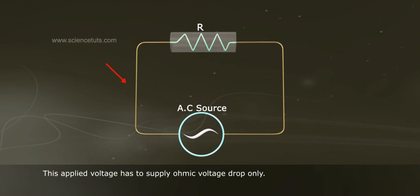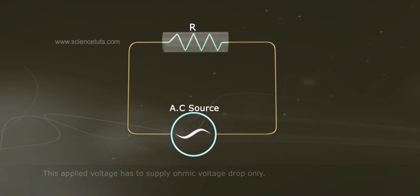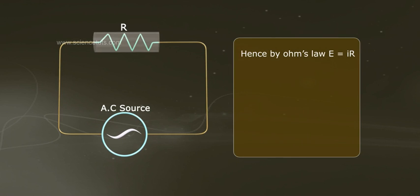This applied voltage has to supply ohmic voltage drop only. Hence, by Ohm's law, E equals to IR.